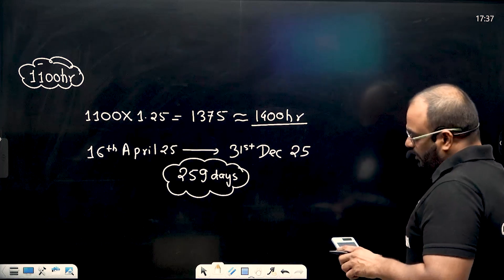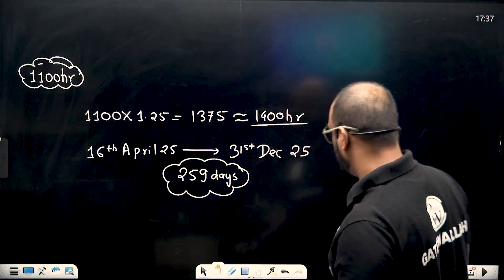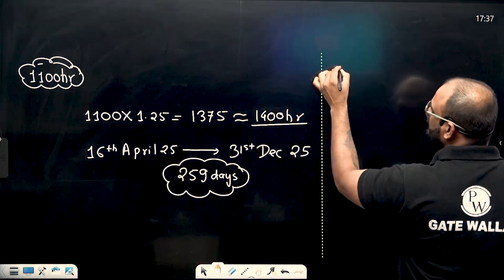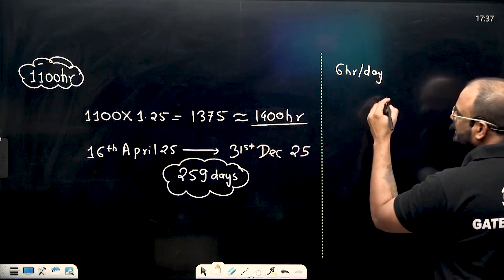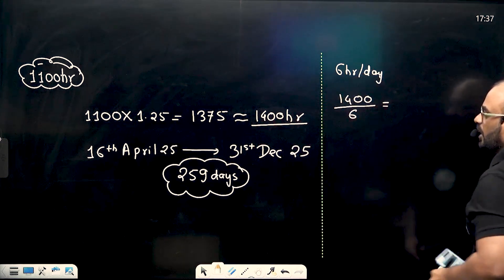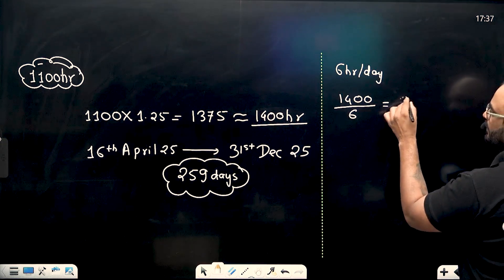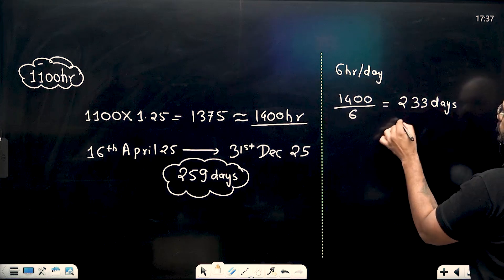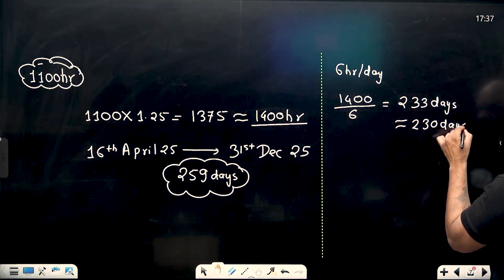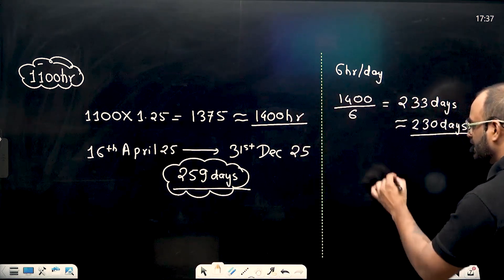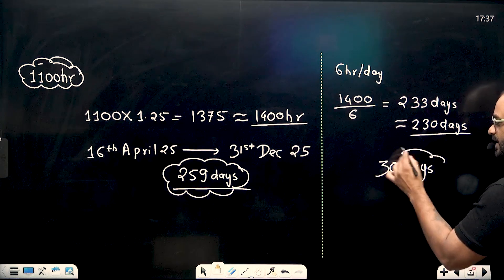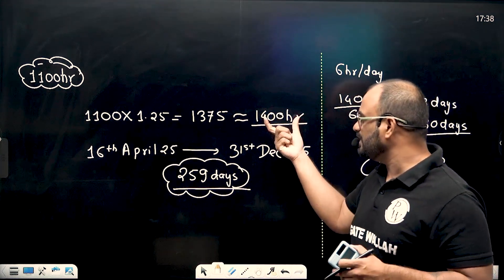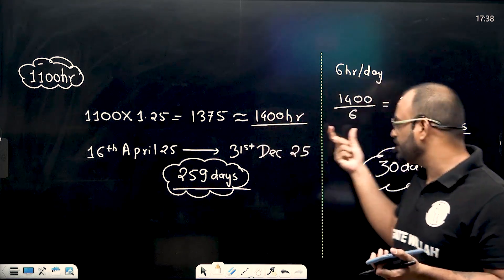If I am giving 6 hours per day, how many days are required? 1400 divided by 6 is approximately 233 days. We have 259 days available, so rounding to 230 days required and 260 days available, we have approximately 30 extra days. That means if you are giving 6 hours per day, you can cover the syllabus within 230 days and still have 30 days as extra duration.